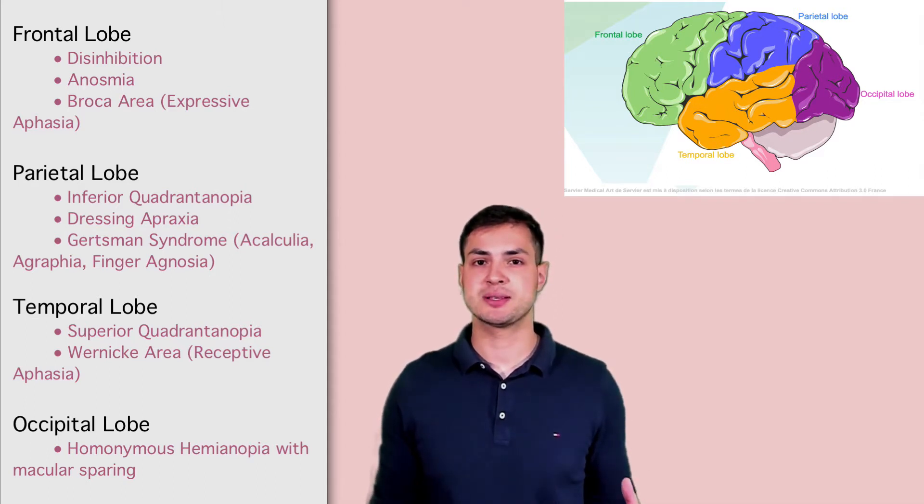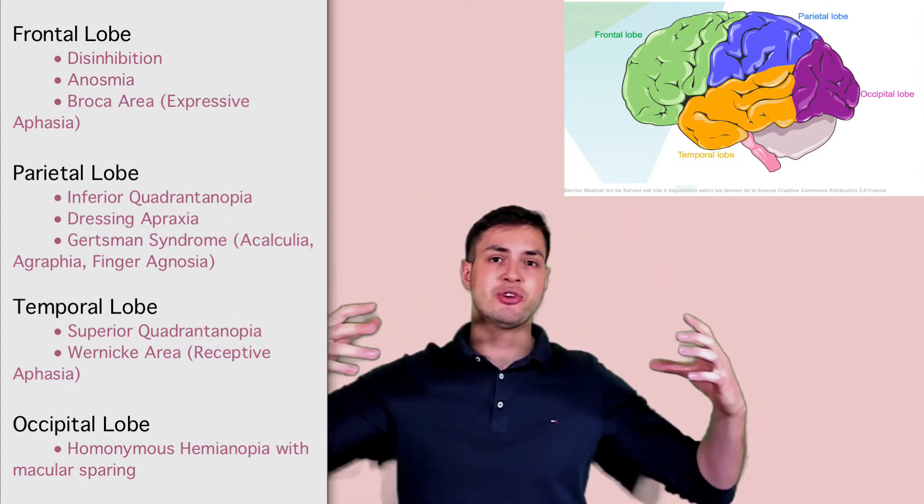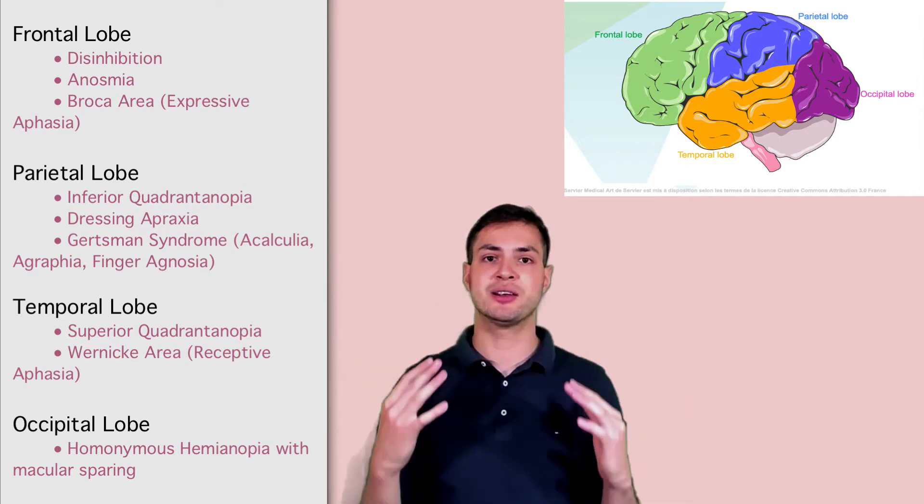Now, how do I remember this? Well, as you can see in the diagram, the parietal lobes sit above and as you know, everything in the brain is opposite. So it's an inferior quadrantinopia.